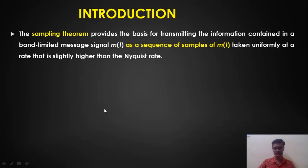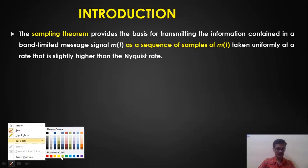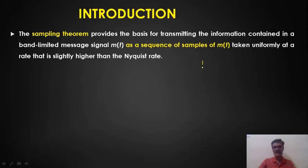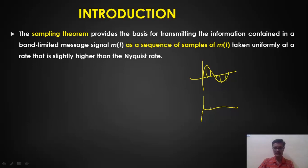Let us say I have this particular analog signal and I want to take samples of it at regular intervals — one sample here, one more here, the third sample, the fourth, the fifth, and the sixth. If I represent the samples using delta functions, it looks like at every Ts seconds I take the samples of my analog signal. Now there is a time gap between these pulses.